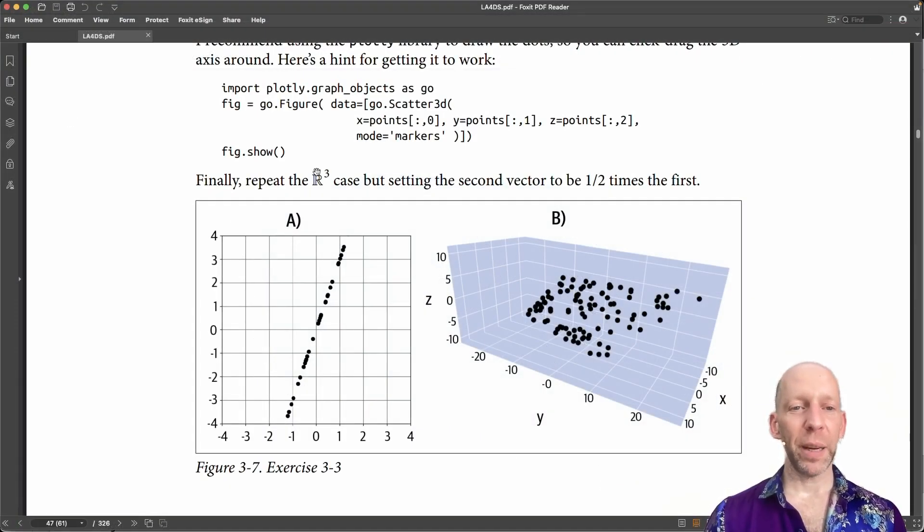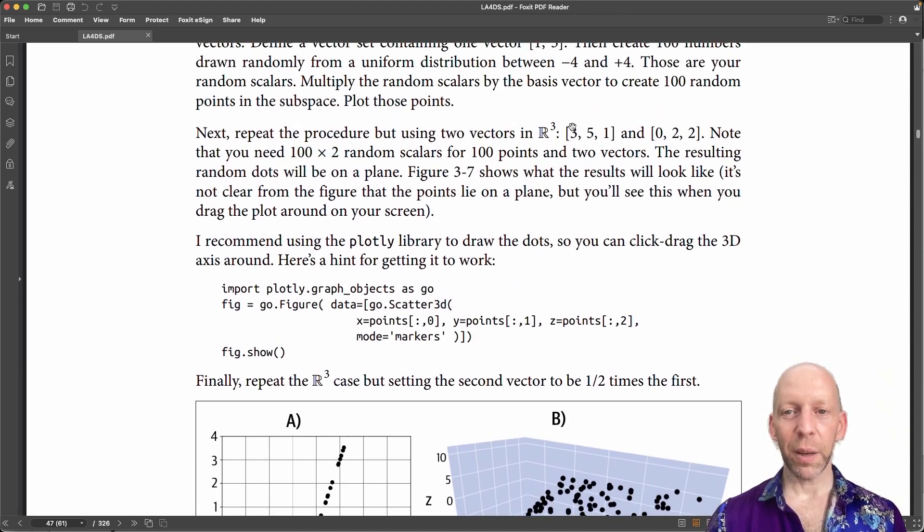There was one final aspect to this exercise, which is to repeat the 3D case here, but setting the second vector to be one half of the first vector. So what does that mean? So if we go back and look at these two vectors, you can see that they are different from each other. So you put them together in a set, and that forms a linearly independent set, meaning we cannot derive one vector as a scaled version of the other vector. So now what we are going to do is change the code so that the second vector is one half of this.